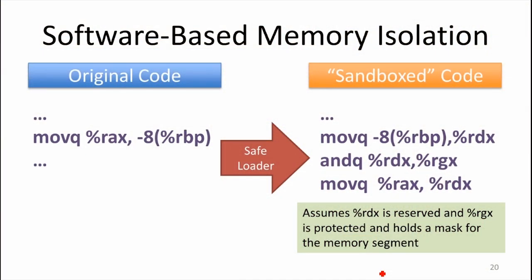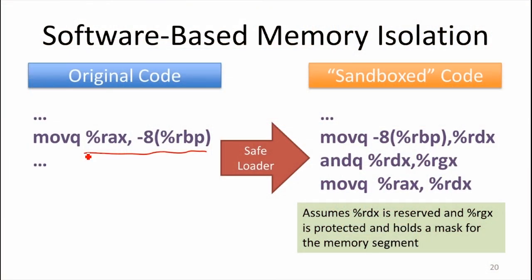As an example, we could rewrite instructions. For any x86 binary, to provide memory isolation we need to look at any instruction that accesses memory and restrict what it can access. So we could sandbox the code. If the original code has an instruction moving from the RAX register into a memory location offset from the base pointer RBP, unless we know what value is in RBP, this may or may not be safe — it could be accessing another process's memory.